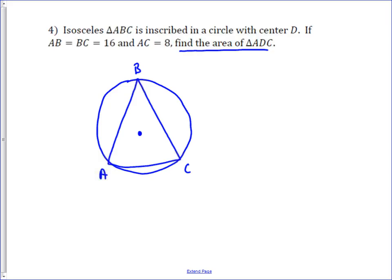First off, if we draw in our altitude of triangle ABC, we can calculate that. Because in an isosceles triangle, the altitude is also the perpendicular bisector, and it's also the angle bisector in the vertex angle.